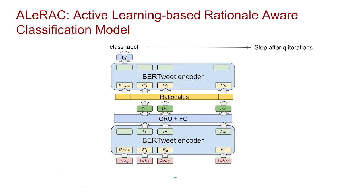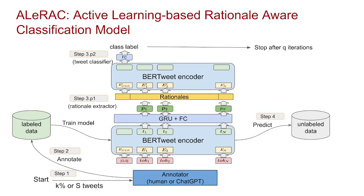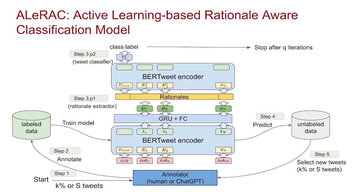Here is our proposed approach. We compare human and ChatGPT annotation and their impact on tweet classification in an active learning setup. First, we sample a small set of tweets and give it to humans and ChatGPT to annotate rationals. Then we use the labeled data to train our model. Next, we predict rationals on unlabeled data and compute the confidence score of the predicted rationals. Then we select a new set of tweets based on the confidence score and give it to humans and ChatGPT to annotate the data for the next training round. We repeat those steps and stop after Q iterations.